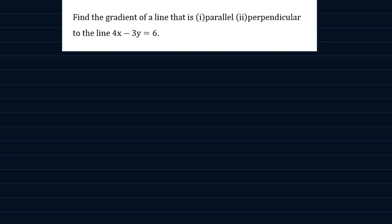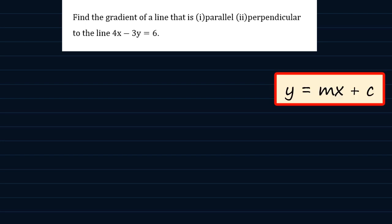So, in order to work this one out, we need to first express the equation of the line in the form y is equal to mx plus c. We do this by making y the subject. If we make y the subject, it should give us y equals 4 thirds of x minus 2.